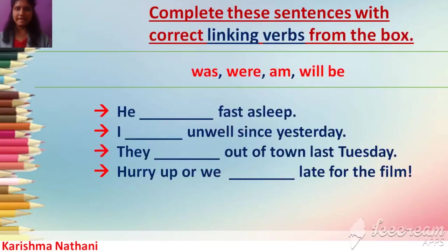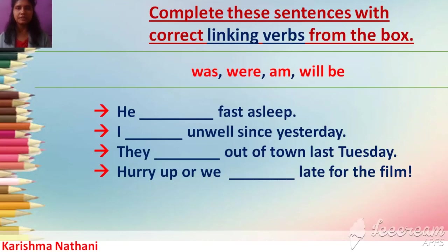Next exercise: Complete these sentences with correct linking verbs from the box. Linking verbs are given in the box; select the correct one and put it into the blank. 'He ___ fast asleep.' Answer: 'He was fast asleep.' 'Was' shows past state.